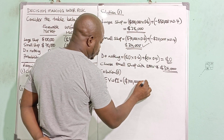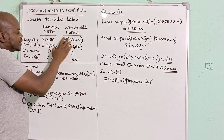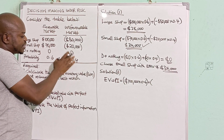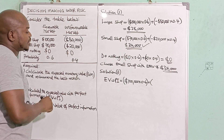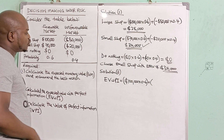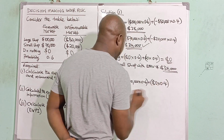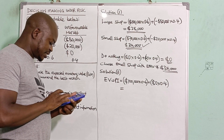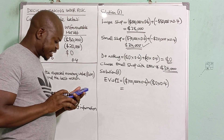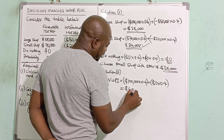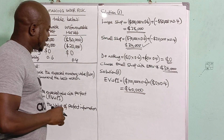The expected value with perfect information equals the best choice under favorable market — $100,000 × 0.6 — plus the best choice under unfavorable market. The biggest number under unfavorable is not negative $80,000 or negative $20,000; it's actually $0 (do nothing). So we use $0 × 0.4. Processing this gives $60,000 as the expected value with perfect information.